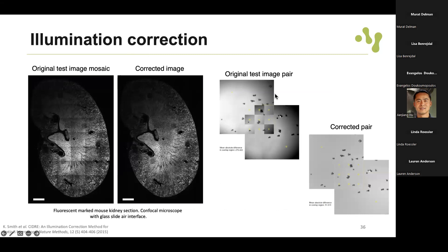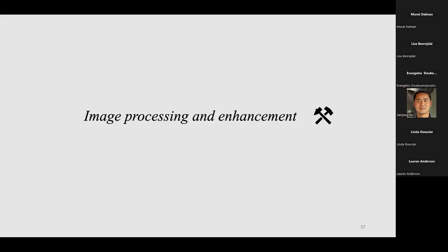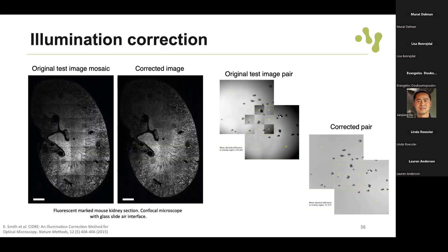Illumination correction is another example - we will have a practical exercise in the workshop. Here is an example of vignetting in a mosaic stitched image, where you can see the tiles and the corrected version. There are methods to correct uneven illumination. This is the last example on how to ensure image quality - whatever you can correct during acquisition will make image processing and analysis easier.